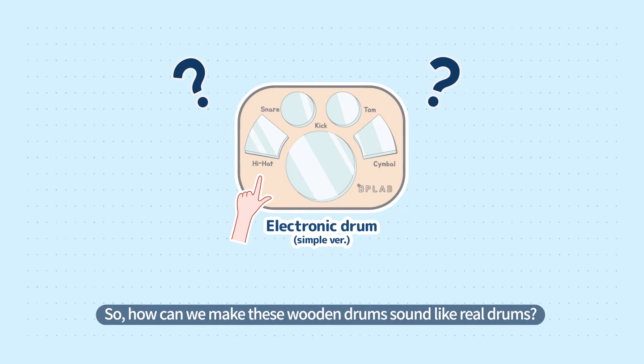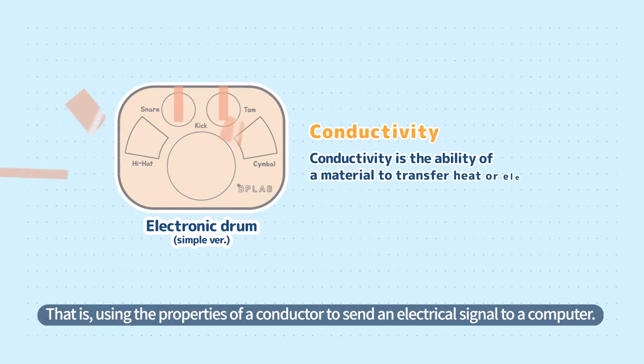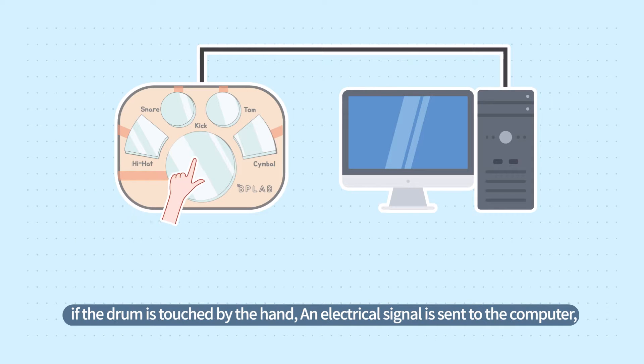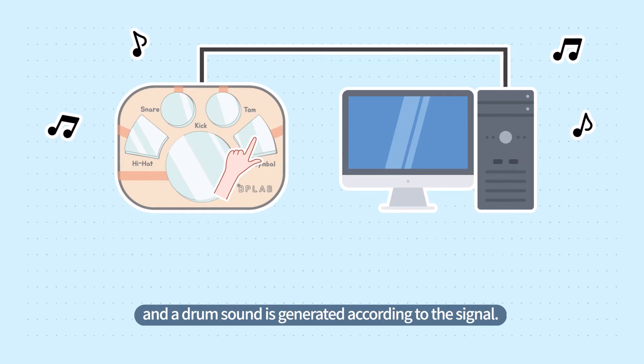So, how can we make these wooden drums sound like real drums? By using the properties of a conductor to send an electrical signal to a computer. By attaching a conductive material to the drum, if the drum is touched by the hand, an electrical signal is sent to the computer, and a drum sound is generated according to the signal.